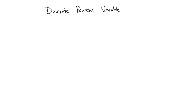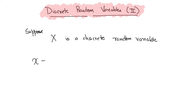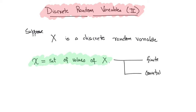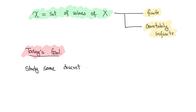Today we will talk about discrete random variables. This is part two of two videos. Suppose x is a discrete random variable and script x is the set of values of x. We know that the values of x would either be a finite set or a countably infinite set. Today's goal is to study some discrete random variables which have the values of script x to be an infinite set.